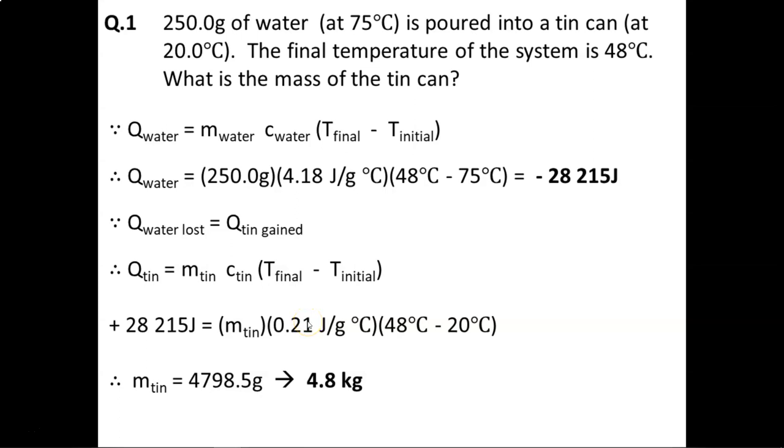And then the final temperature minus the initial temperature, because it is going to be 48 minus 20, which is a positive value, so that is energy gained instead. Once we rearrange the calculations, we get 4798.5 grams, which is 4.8 kilograms of mass for the tin.